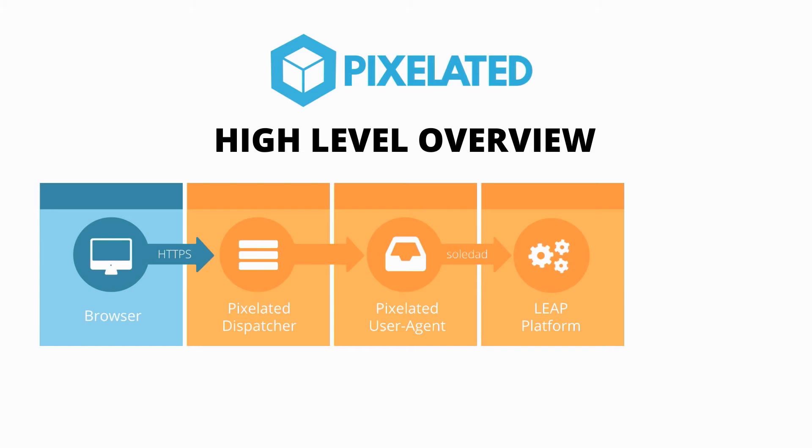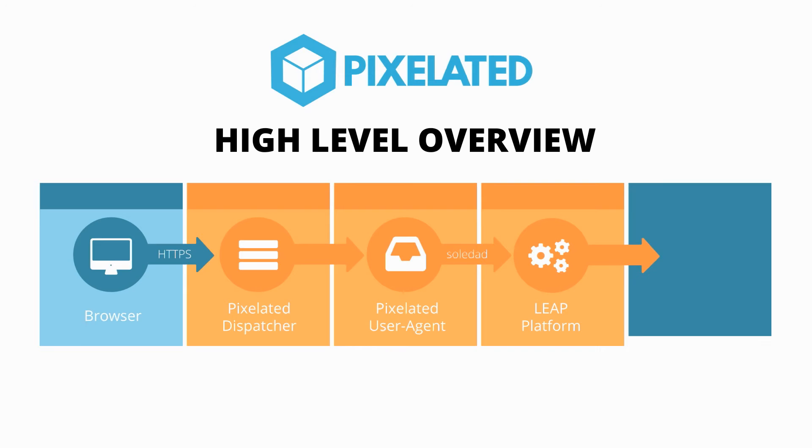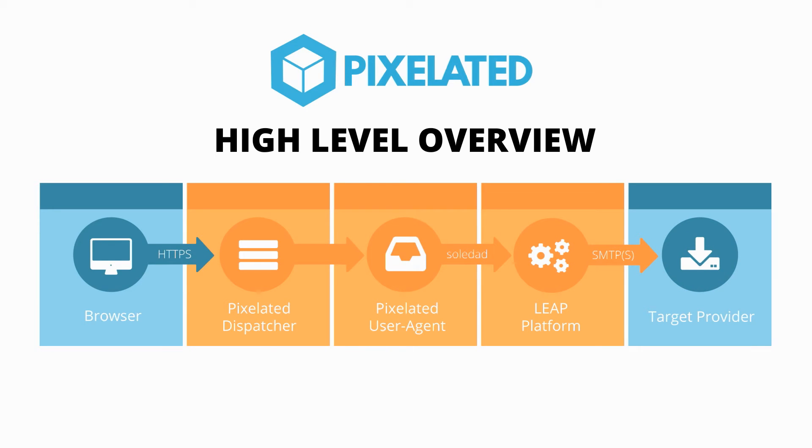We're using the Leap platform. The Leap platform is the email server that has a CouchDB database and encrypts everything on the disk. It provides a hardened Debian installation. From there, we are back into normal email land where we transmit the email to other servers on the internet.